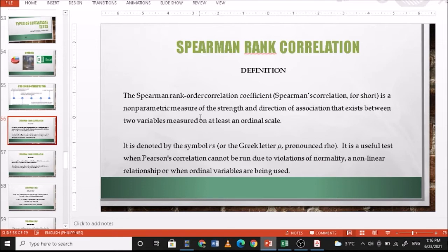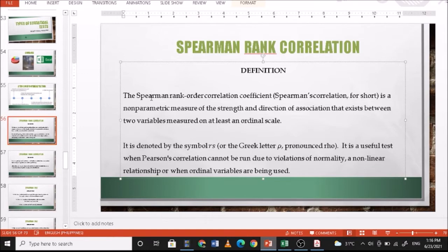For this presentation, we're going to discuss the Spearman Rank correlation. The Spearman Rank correlation coefficient is a non-parametric measure of the strength and direction of association that exists between two variables measured on at least an ordinal scale. It is noted by the symbol RS or the Greek letter rho. It is a useful test when Pearson's correlation cannot be run due to violations of normality, a non-linear relationship, or when ordinal variables are being used, also if there are outliers.